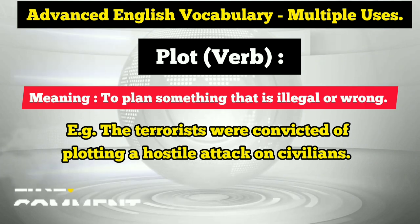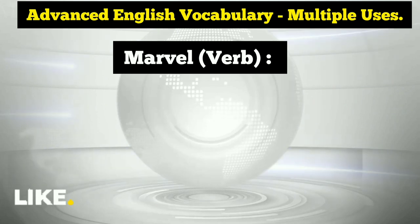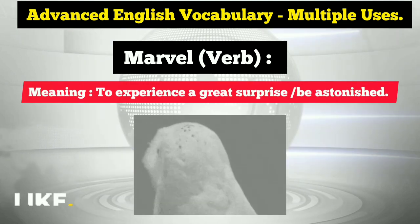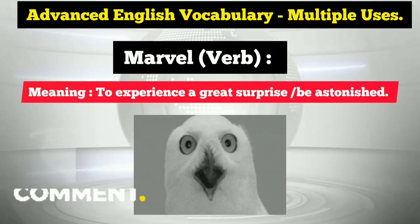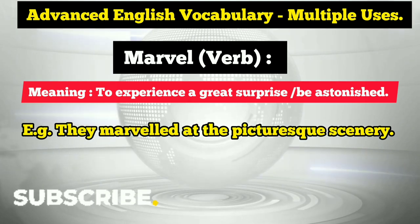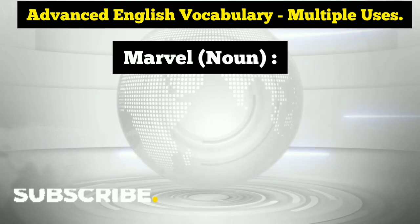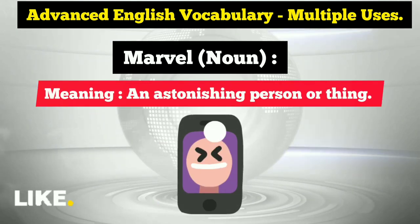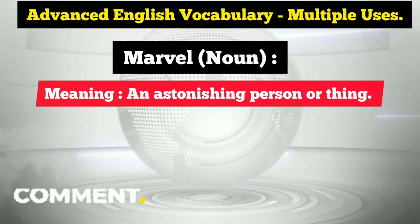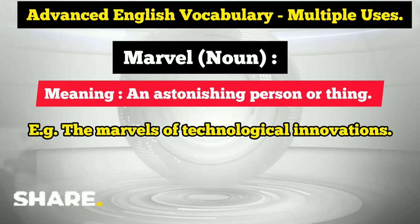Up next is the word 'marvel,' also used in multiple ways. As a verb, the first meaning is to experience great surprise or to be astonished — to marvel. For example: 'They marveled at the picturesque scenery,' meaning they were astonished by it. The second meaning of marvel is used as a noun, referring to an astonishing person or thing. For example: 'The marvels of technological innovations.'